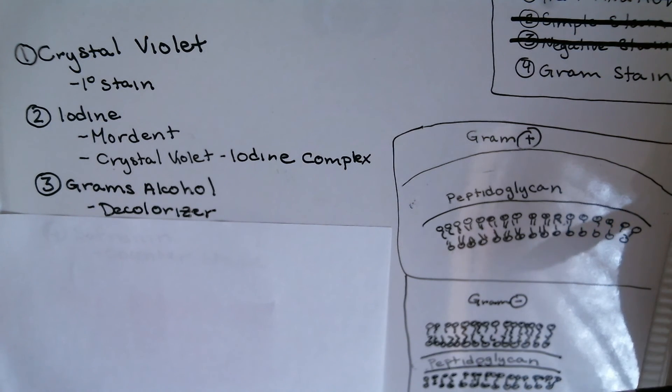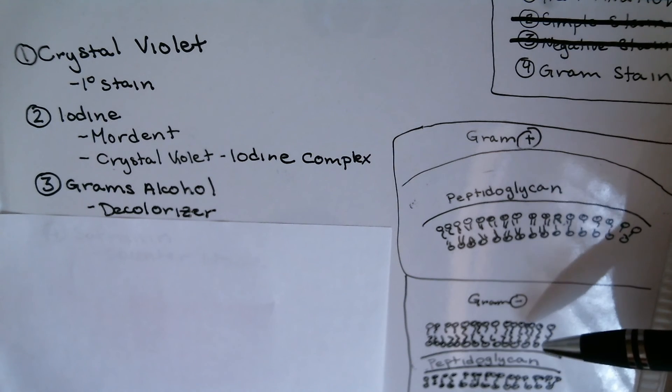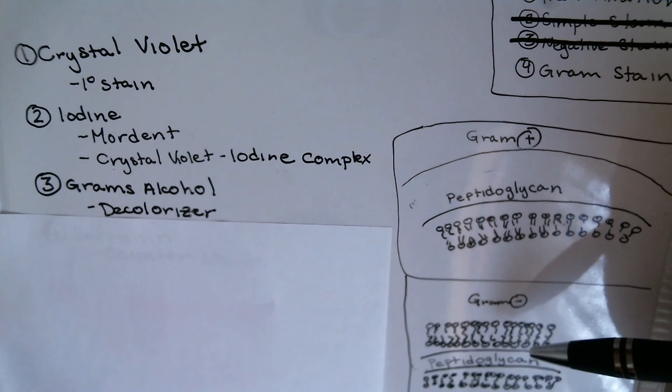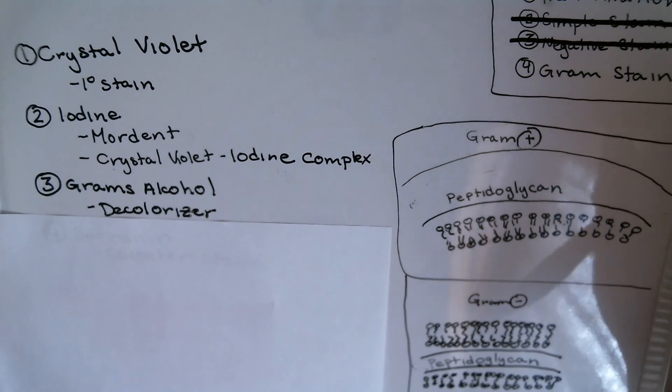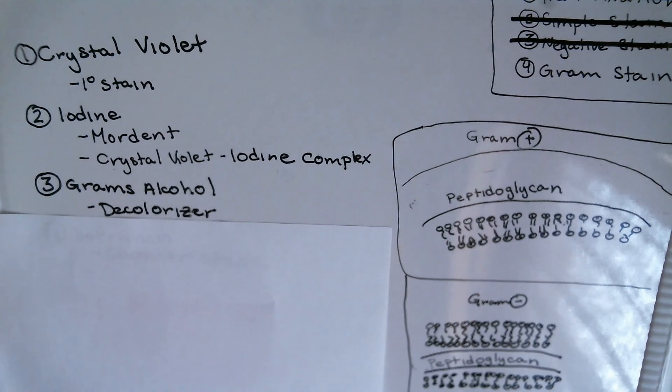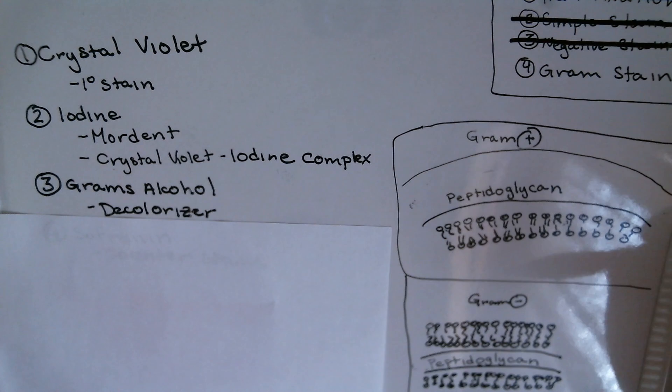But what it also does for gram-negative cells is that it causes the lipids here and causes this cell wall to become more porous, causing the iodine complex to leak out. With that, your cells would be decolorized back to how you originally had them before adding the crystal violet if it's a gram-negative cell.